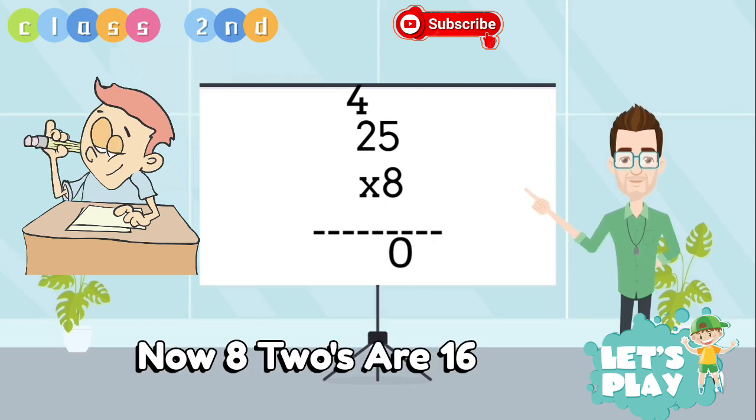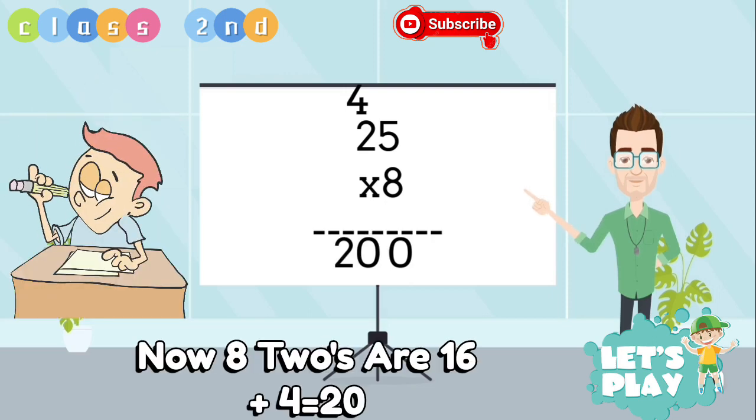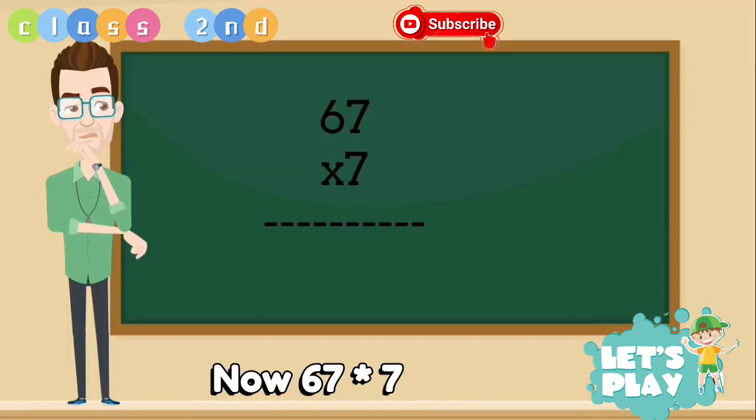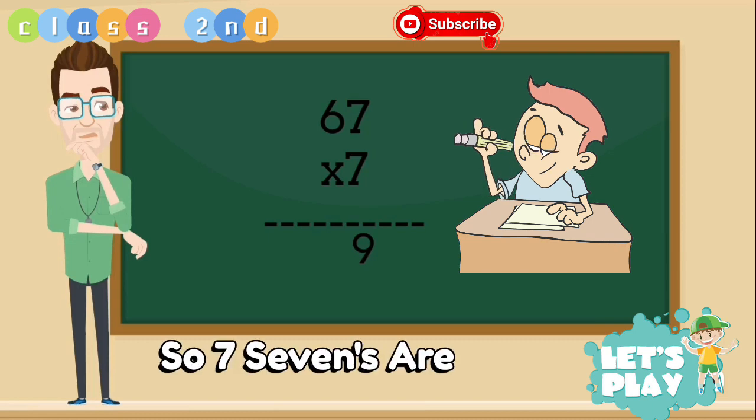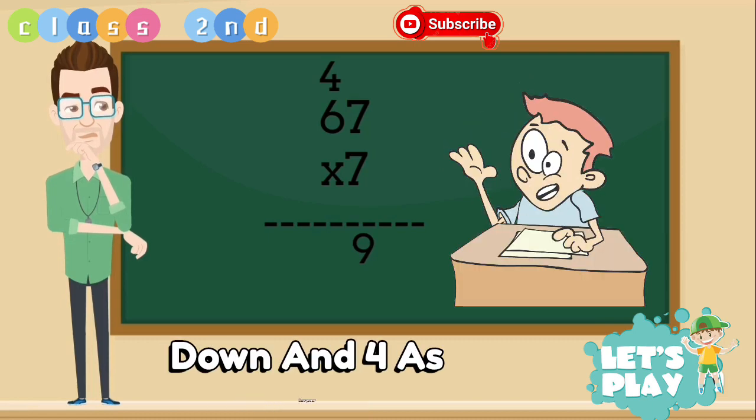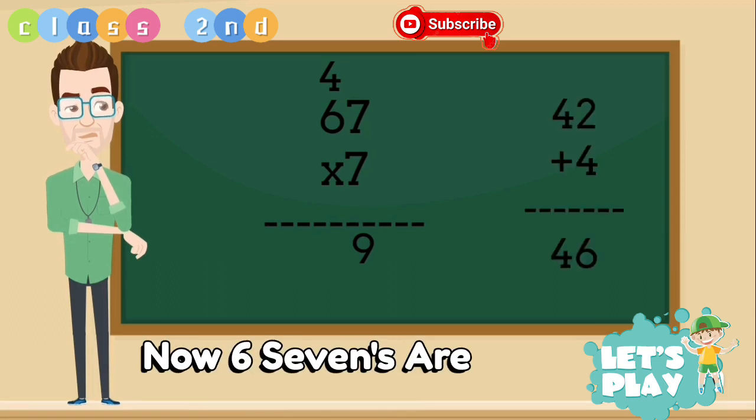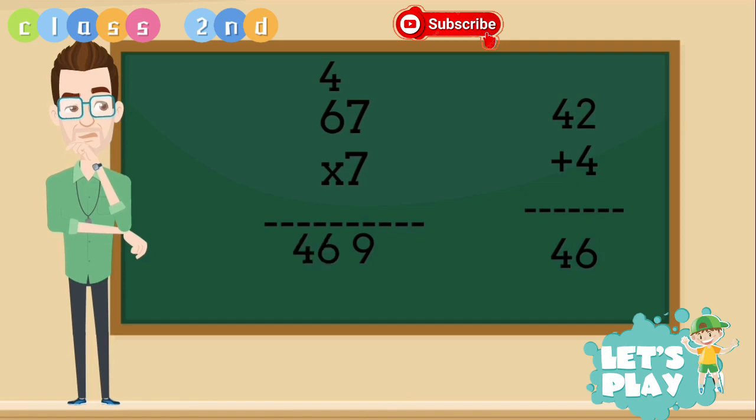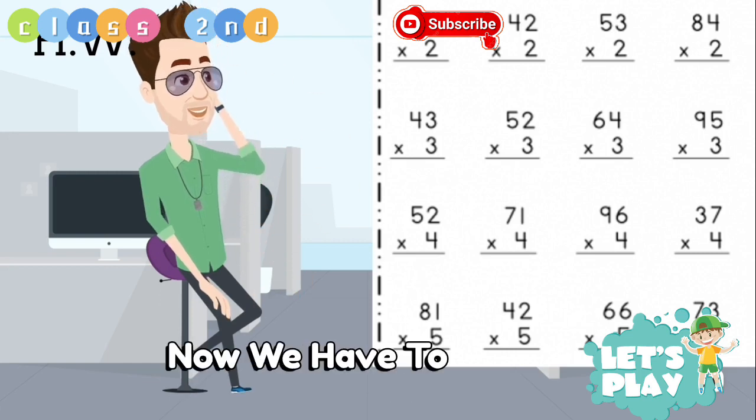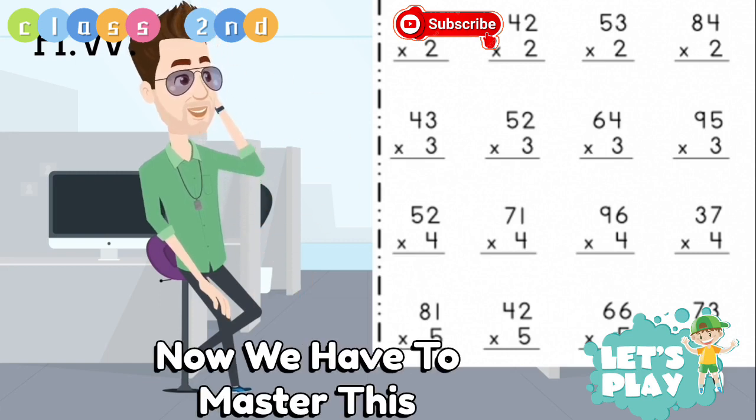Now 8 2's are 16 plus 4, 20. Now answer is 200. Now 67 multiplied by 7, so 7 7's are 49, 9 we write down and 4 as carry over. Now 6 7's are 42 plus 4 from carry, we'll get 46. Now answer is 469. Now we have to master this class.